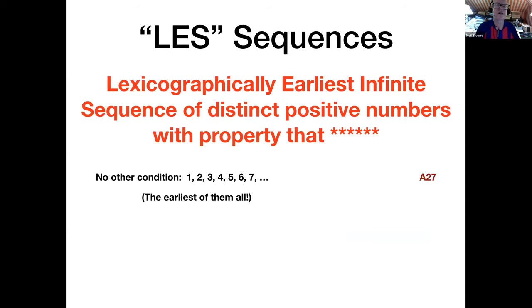It's an example of a family of sequences called the LES sequences. These are sequences that have the property that they're the lexicographically earliest infinite sequence of distinct positive numbers satisfying some condition. If there's no other condition, the lexicographically earliest infinite sequence of distinct positive numbers is simply 1, 2, 3, 4, 5, 6, 7, and so on, the natural numbers sequence A27 in the OEIS.